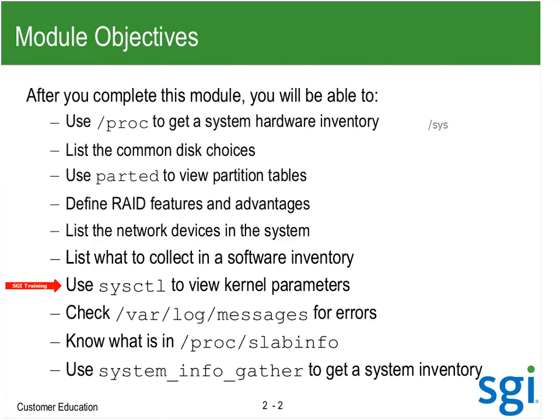List the network devices in the system with netstat -i. Figure out what to collect in a software inventory. System_info_gather will gather most everything. I want to get into sysctl parameters. I've made some changes on the system this week, but the sysctl parameters are covered in more detail in the second week — the advanced admin class — with lab examples adjusting dirty ratio, dirty background ratio, and things like that.